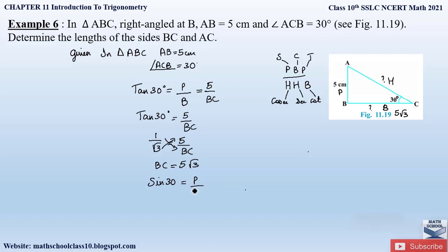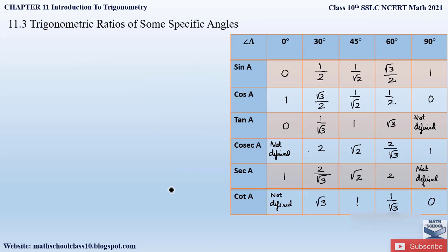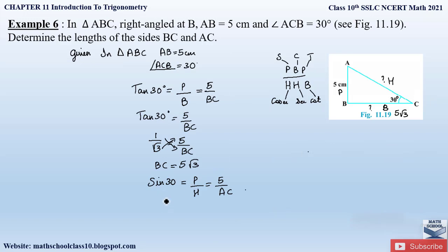Perpendicular by hypotenuse corresponds to sine. So we apply sine 30 = perpendicular / hypotenuse = 5 / AC. From the table, sine 30 = 1/2. So 1/2 = 5/AC. Cross multiplying: AC = 5 × 2 = 10 centimeters. The value of AC is 10 cm and BC is 5√3 cm.